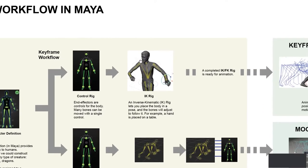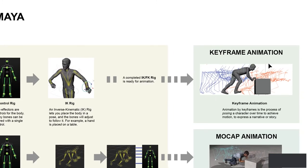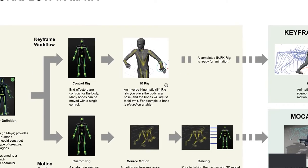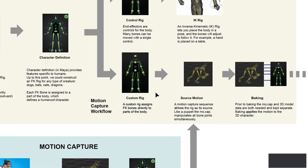Now that we've done a control rig, we've met the needs to create an IK-FK rig for animation. Going back to our diagram, this is essentially now complete — we've created a completed IK-FK rig and we're ready to do keyframe animation. This is not what we're really covering here, and we're not going to go into keyframe animation, but I just wanted to show that it's not so difficult to create one. We're going to focus more on the motion capture rigging.